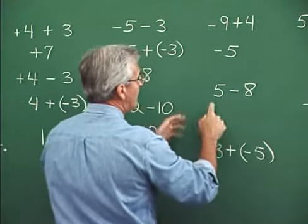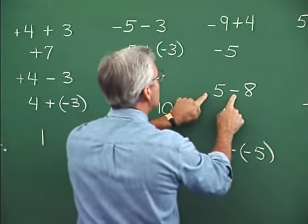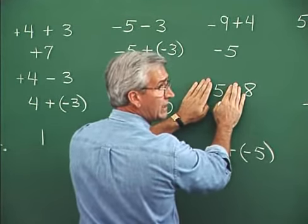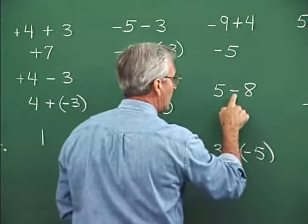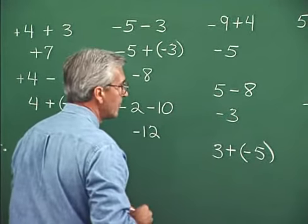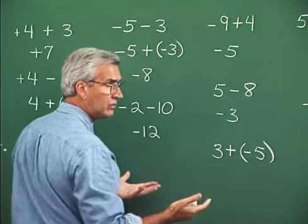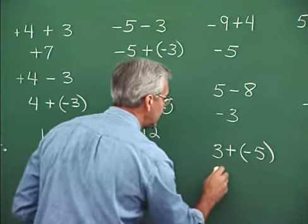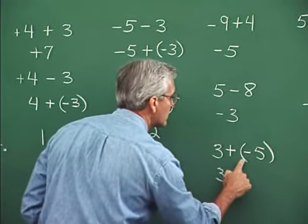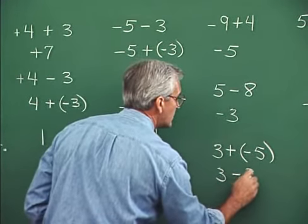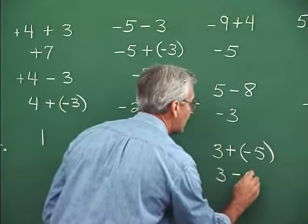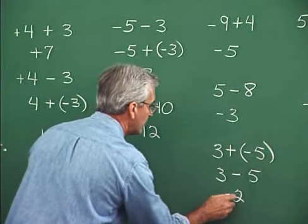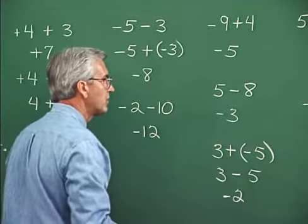Five minus eight: that's five plus negative eight. The signs are different — understood plus and clearly minus — so subtract the digits: take five from eight to give three, and attach the sign of the larger digit, which is negative. So we get negative three. Three plus negative five: we can drop the parenthesis — when a plus sign precedes a parenthesis we can drop the plus sign and the parenthesis. This is just three minus five. Unlike signs — take three from five to give two — and attach the sign of the larger digit, which is negative. So negative two.